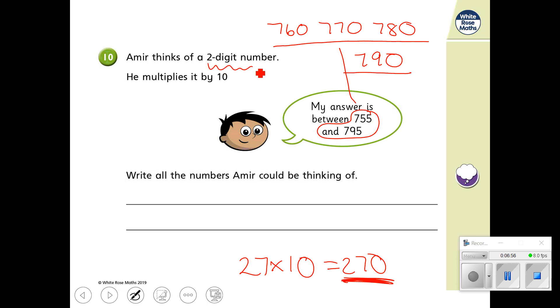Amir thinks of a two-digit number, which you multiply by 10. So we could have 76, we could have 77, we could have 78, or we could have 79. Did you get that one right? OK, we're getting into more advanced mathematics now, problem solving and reasoning.